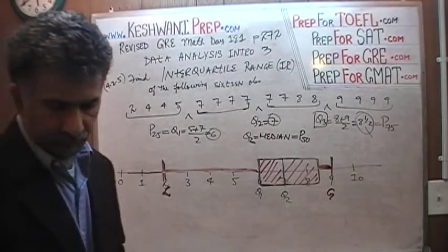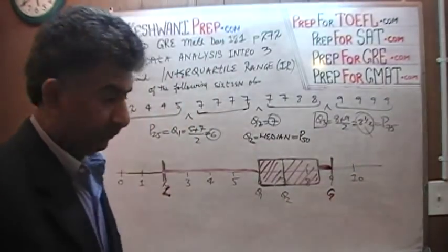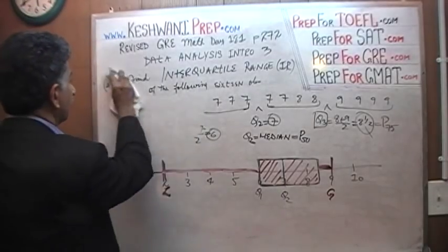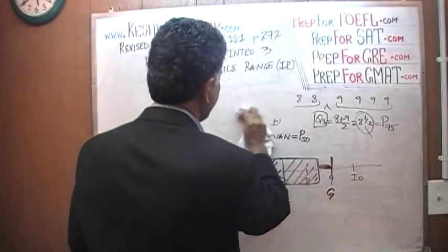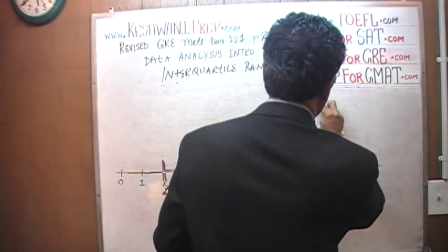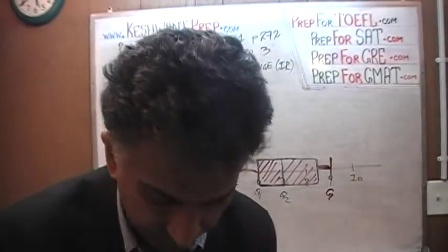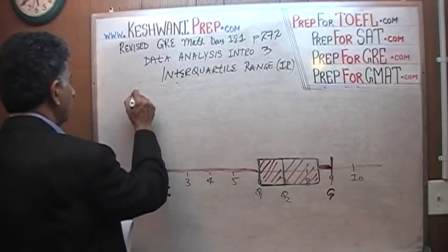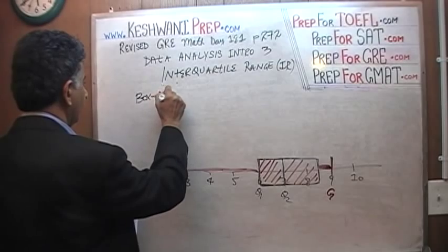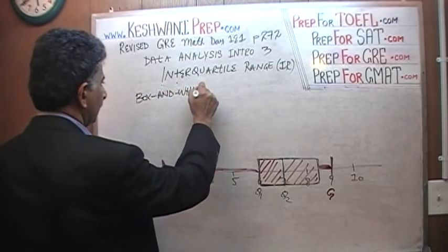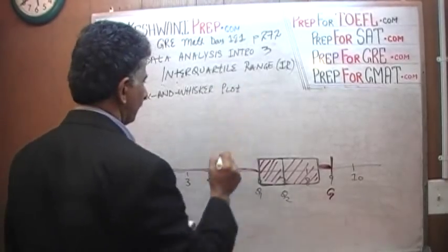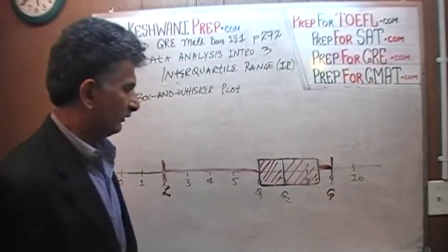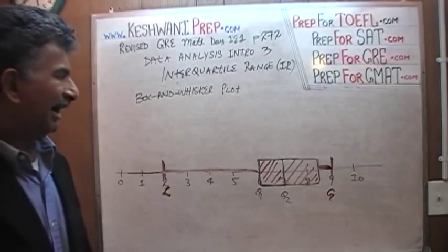This graph actually has a name — for some strange and inexplicable reason it is called a box and whisker plot. That person apparently saw this as the box in the middle, with whiskers extending on either side. There is a whisker here and a whisker here. That is what a box and whisker plot looks like.